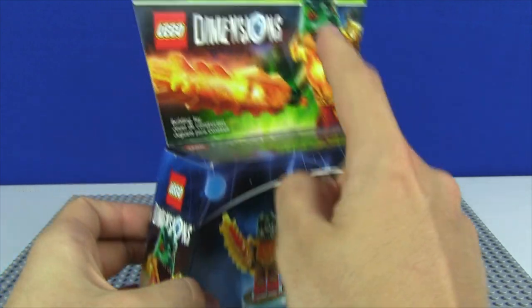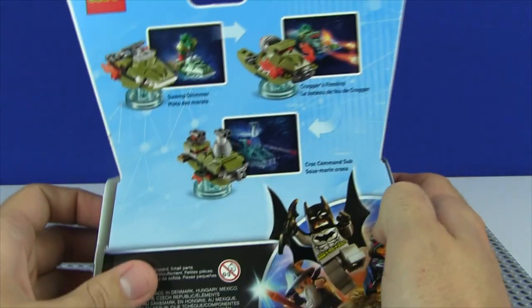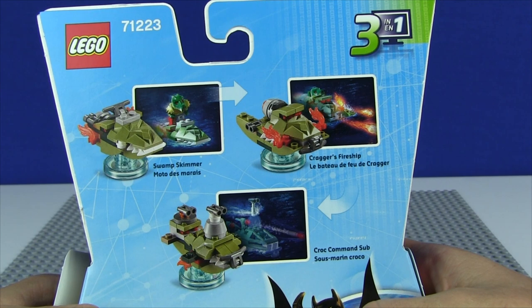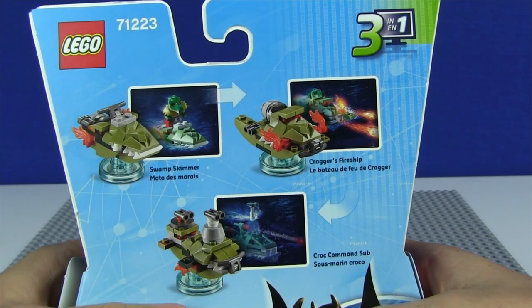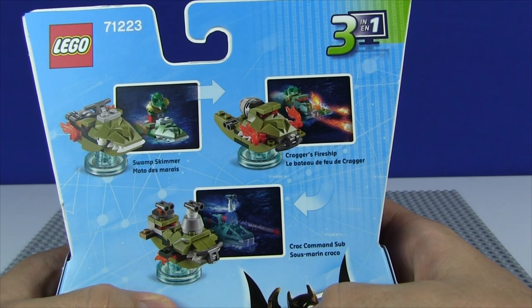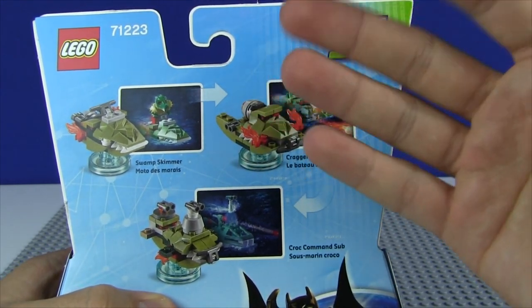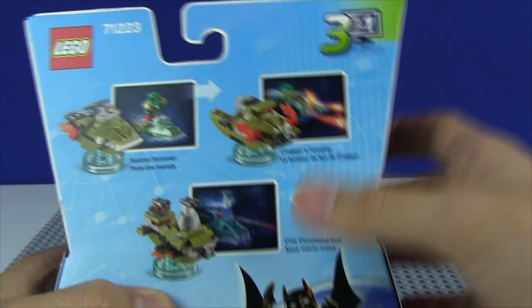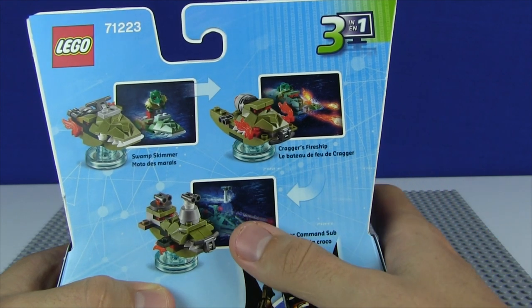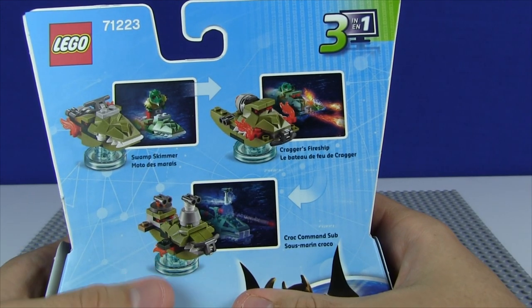We get a nice close-up shot of the exact same art as we see on the front there on this particular side. And then on the back here, we have a beautiful showcase, of course, of all three forms of the Swamp Skimmer. So we have the Swamp Skimmer itself. Then we have Kragger's Fire Ship, which is quite interesting because you have a ship that's going to be firing fire. So that's going to be a really cool visual.